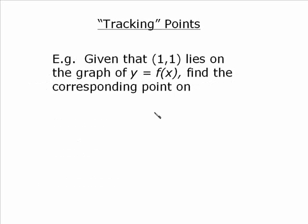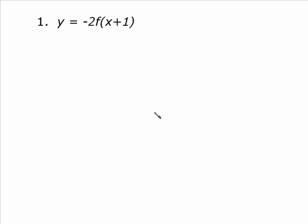Let's take a look at a question involving tracking of points. We're told that the point 1 comma 1 lies on the graph of y equals f of x, and we want to find the corresponding point on y equals negative 2f of x plus 1. We don't know what type of function it is, only that the point 1 comma 1 lies on the original untransformed curve. You have to first identify the nature of the transformations. You can see that because we have a negative in front of the function, we have a reflection in the x-axis.